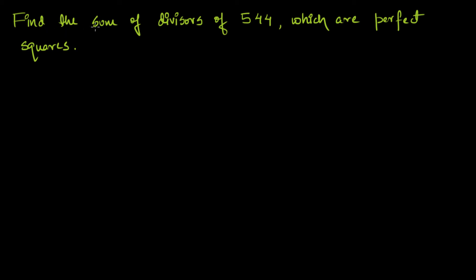Find the sum of divisors of 544 which are perfect squares. Before getting into how to find the divisors which are perfect squares, let us first prime factorize 544. 544 looks like an even number.